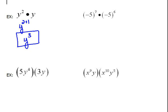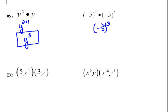In our next one, we have negative 5 to the 7th times negative 5 to the 6th. Here again, we're multiplying the same base, which is negative 5, and we need to add those exponents. We could write that out as 7 plus 6, or we can just add them — 7 plus 6 is 13, so this would be negative 5 to the 13th power.